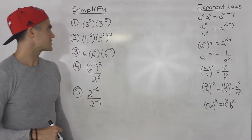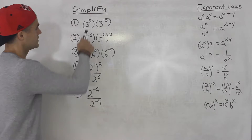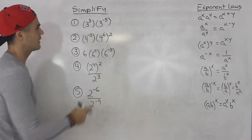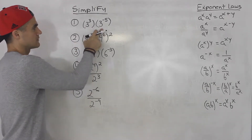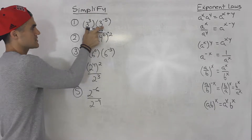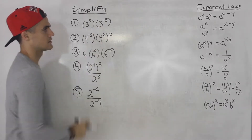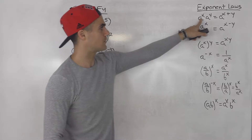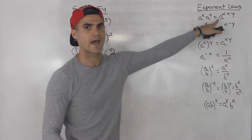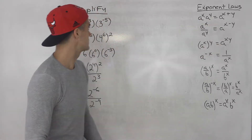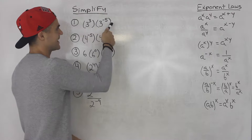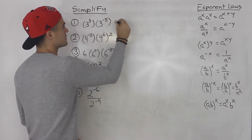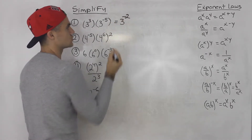Starting with number one, we got three to the power of three times three to the negative five. When you are multiplying exponents with the same base — that is this scenario over here — you just add the exponents.